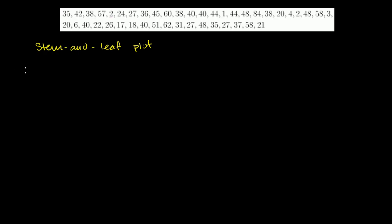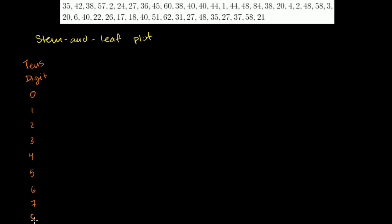So let's write the tens digit right here. The tens digit could be a 0, 1, 2, 3, 4, 5, 6, 7, or an 8. These digits will represent our stem. I'm going to draw a line around here — this is going to be our stem right there. That right there is our stem in the stem and leaf plot.